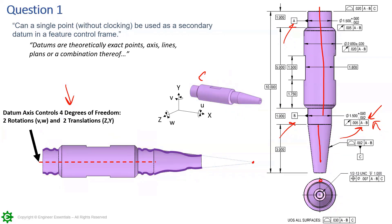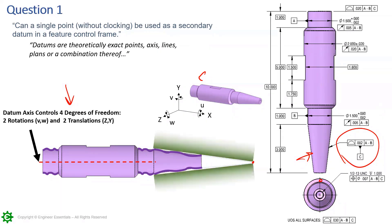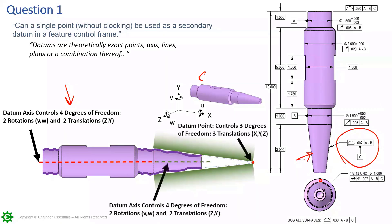Next up, we have datum feature C, which is our secondary datum feature — a conical tapered cone. A cone is going to create an axis and a point. We take the high points of that irregular surface to get an axis and a point.